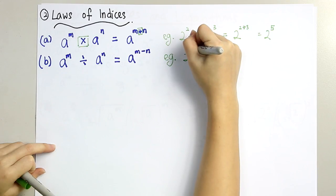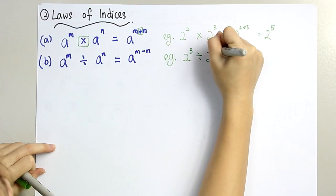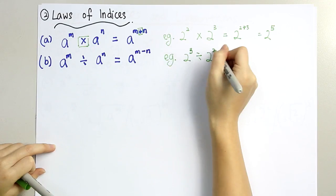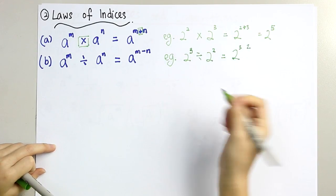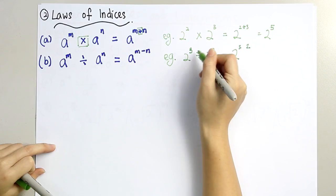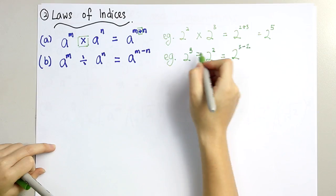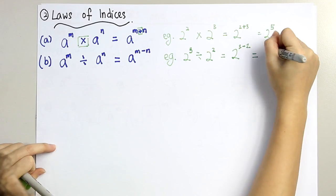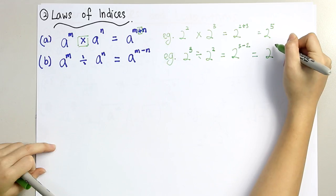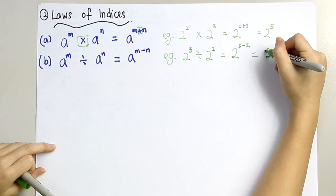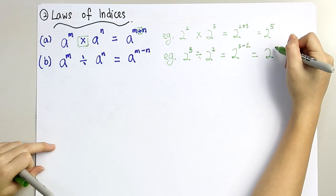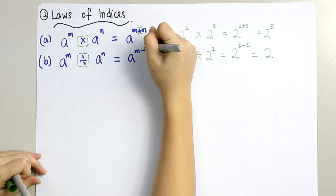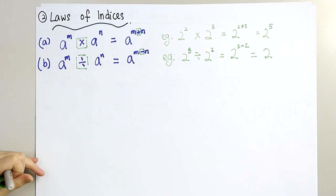Example: 2 to the power of 3 divided by 2 to the power of 2. 2 will remain because it's the same base. We take both of the powers, 3 and 2, and for dividing we minus — 3 minus 2 for the powers. So we get 2 to the power of 1. When 2 is to the power of 1, we do not have to write the power, so we just write 2. For dividing, we use subtraction for the powers.